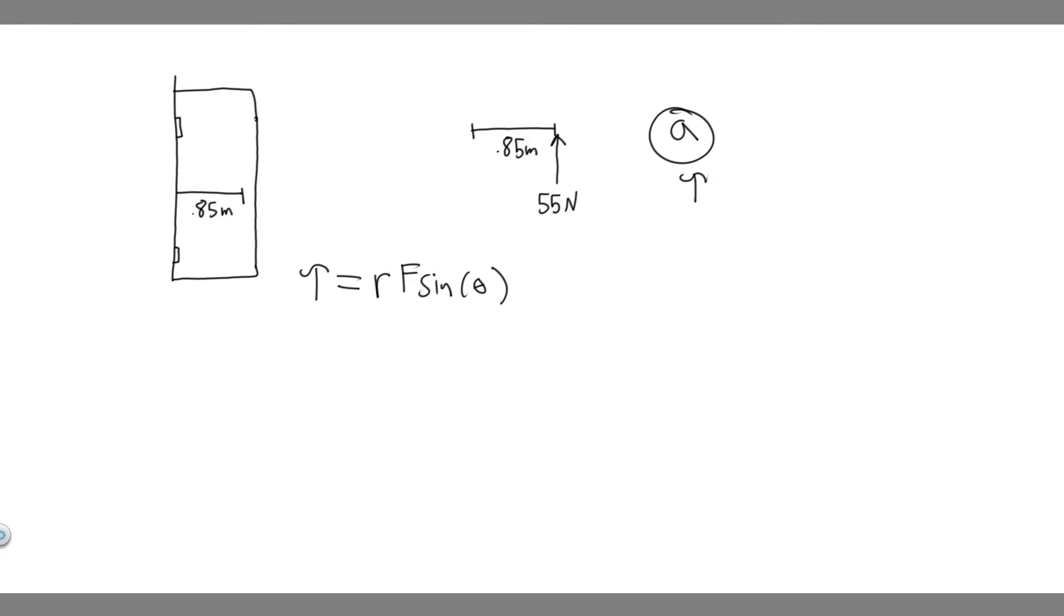So solving for it, torque is equal to the radius. And so in this case, we're pushing it 0.85 meters from the hinges. And so if you imagine this thing as a rotates in a circle, like a revolving door, the radius between where the force is being applied is 0.85 meters from the hinges. And so when they tell you that, they're basically telling you the radius.